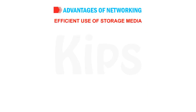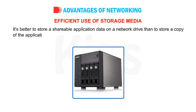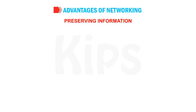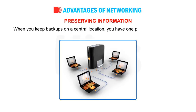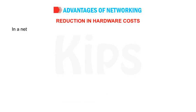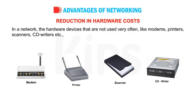Efficient use of storage media: It is better to store a shareable application data on a network drive than to store a copy of the application on each user's storage device. It is better to have one big hard disk in the server than to have small hard disks in different computers. Preserving information: It is difficult to maintain regular backups on a number of stand-alone computers. When you keep backups on a central location, you have one place to look for the lost information. Reduction in hardware cost: In a network, hardware devices that are not used very often, like modems, printers, scanners, CD writers, etc., can be shared. This reduces the cost of hardware.